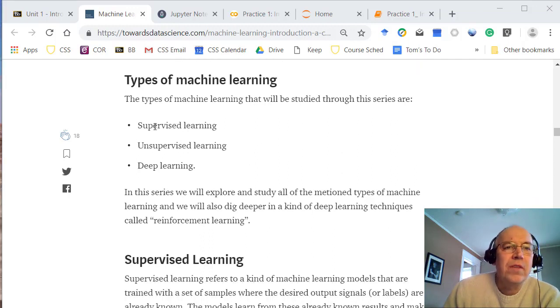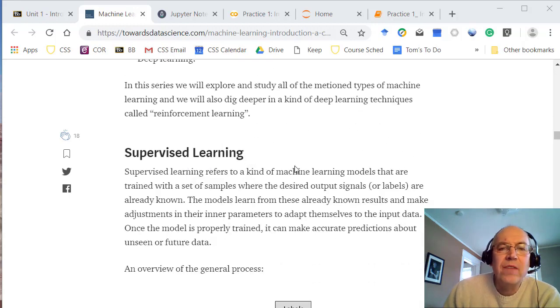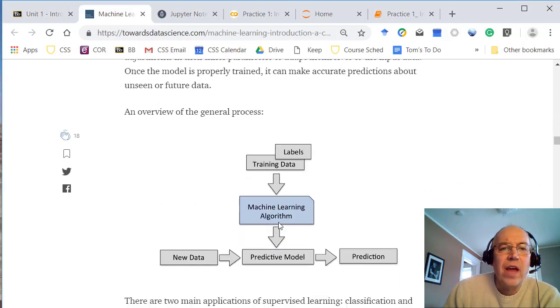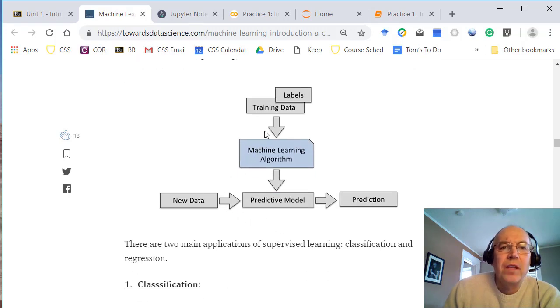Next we're going to look at some of the different types of learning. There's supervised and unsupervised learning - we'll be doing both. Deep learning is just an advanced version and you can do that for either supervised or unsupervised. Supervised learning is when we have a set of data with samples and the desired output or label is already known and given to us. Here's a general process: we take this training data and the labels, use a machine learning algorithm to train and create a model, and then we can take new data, put it in our model, and generate predictions.